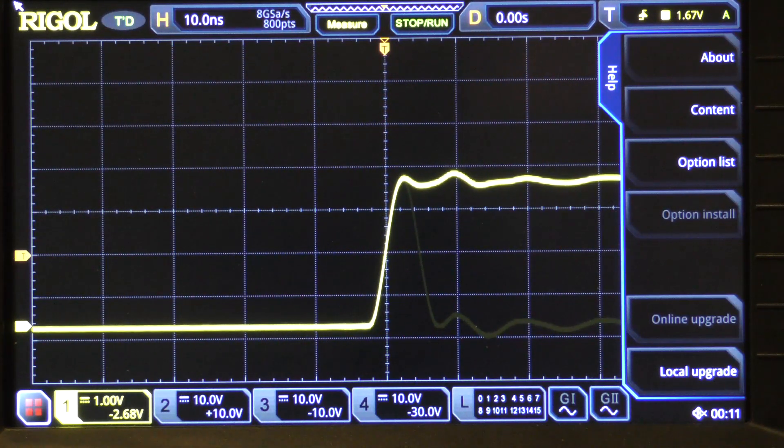The thing about zone triggering is it allows you to basically draw a box on the screen that you can then use to qualify a trigger. So what do we mean by qualify?